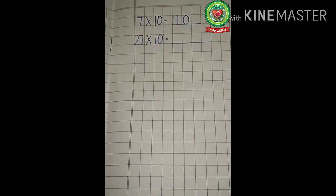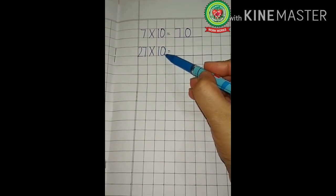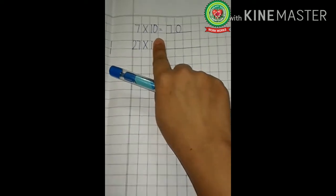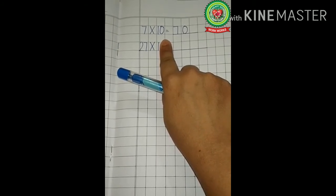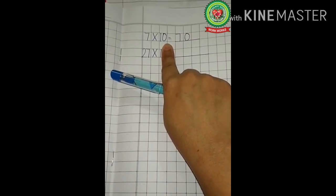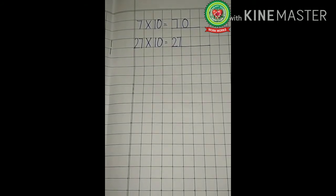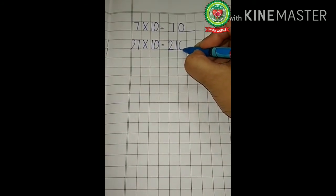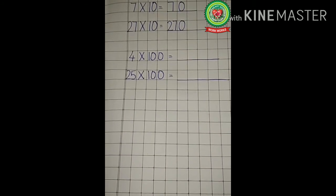So we will write one zero at the right hand side of the number. So the answer is 70. Now take the next example. What is the question? 27 multiplied by 10. Again the same rule applies. Hide the zero with your finger. After hiding the zero, what can you see? 27 multiplied by 1. Anything multiplied by 1 is the same number, so 27 multiplied by 1 is 27. Write 27 over here. Now after removing your finger, one zero is there, so we write one zero after the digit. The answer is 270.